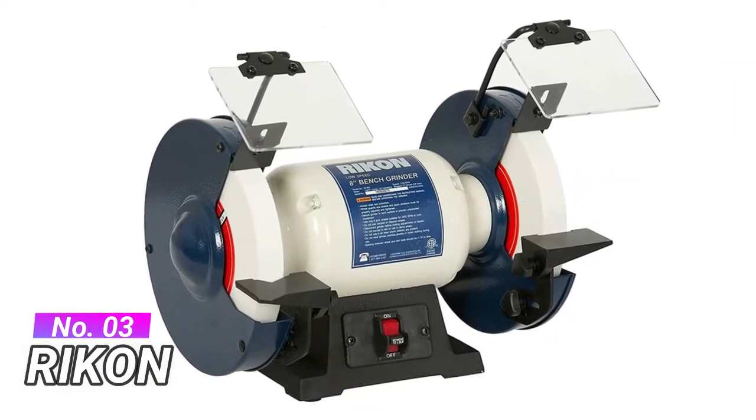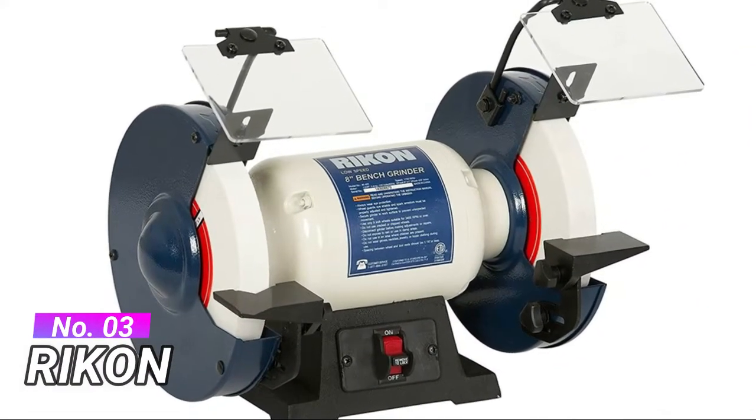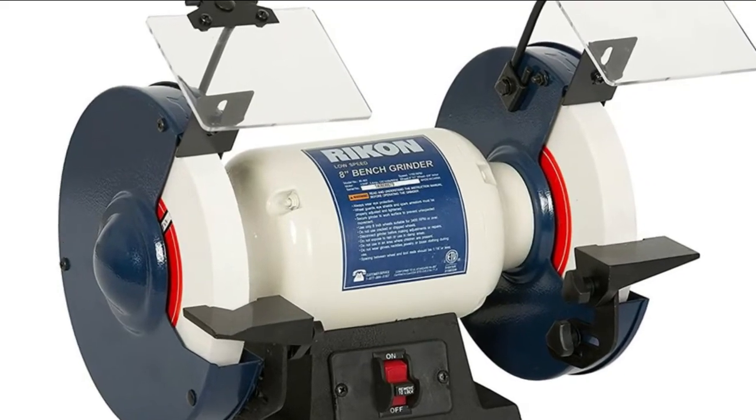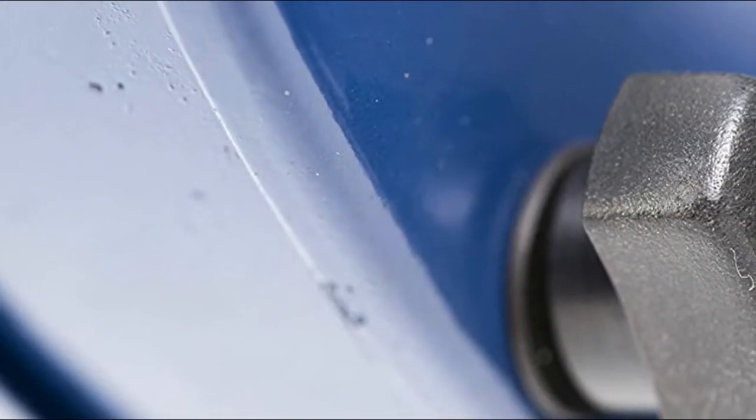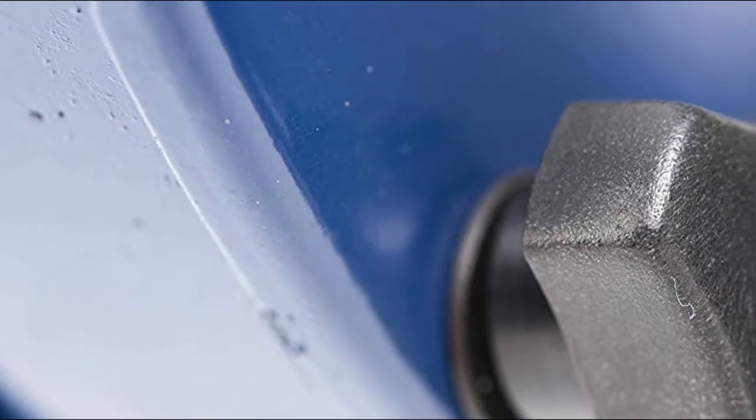Number 3, Ryken. With powerful 1.5 HP motor with 1750 RPM, this slow speed grinder has more than enough power for small workshops and for carpenters, turners, carvers and other craftspeople working with hand tools.